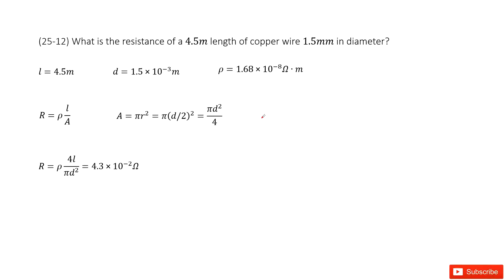Chapter 25 is about electric currents and resistance. So there we can see we have a resistor. Its length is given and its diameter is given. We need to find its resistance.